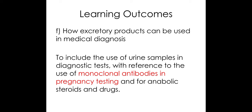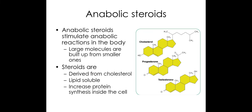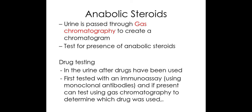We've looked at how we use monoclonal antibodies in pregnancy testing. The next thing we need to know about is anabolic steroids and drugs. Anabolic steroids are normally detected through gas chromatography.